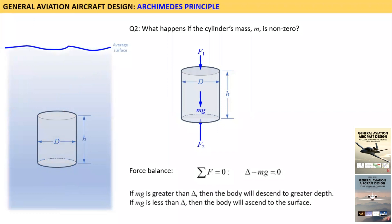Thus, if Mg is greater than delta, the body will descend to a greater depth. And if Mg is less than delta, the body will ascend to the surface.